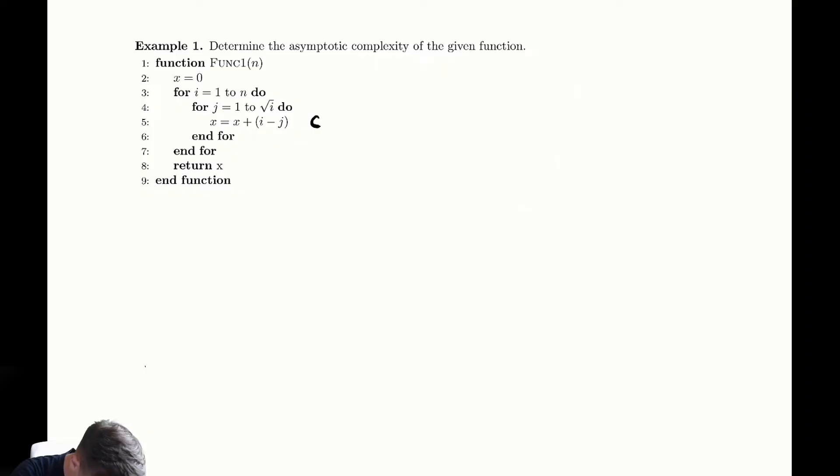The cost of one iteration is just constant because we're just doing basic arithmetic there. And then we can express the total cost of running every single iteration of those four loops in terms of summations. So let us write that down.